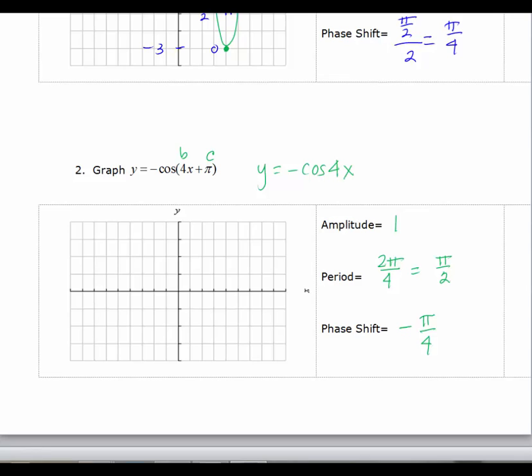So I'm first going to graph y equals cosine 4x, remembering that I'm using a period. The period is pi over 2. Now, again, you can count out 8 and have pi over 2 or count out 4. I'm going to count out 4 and call this pi over 2, which means this is pi over 4.